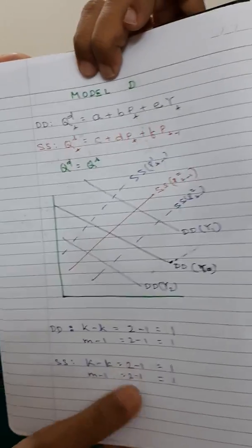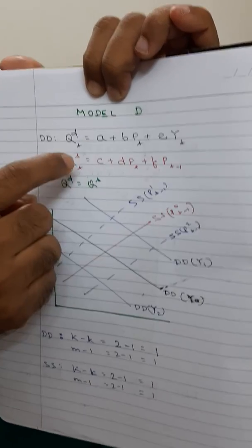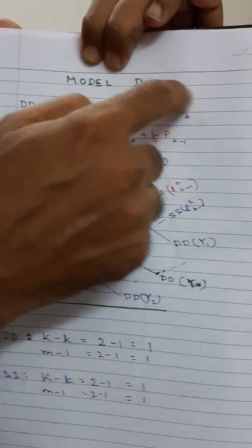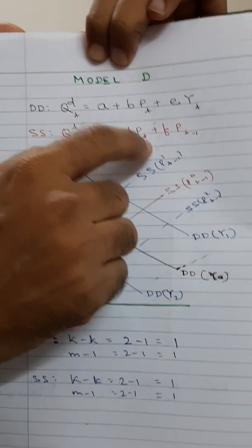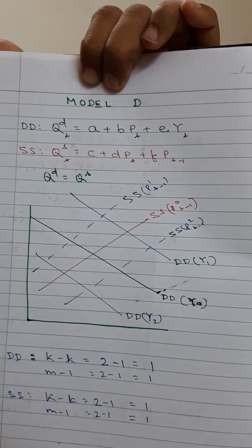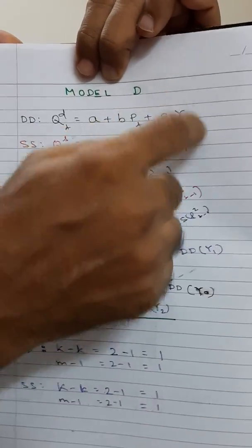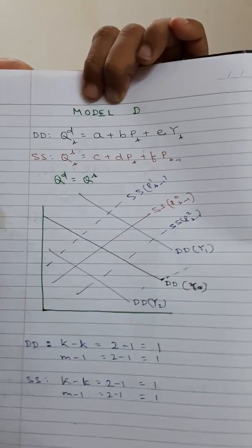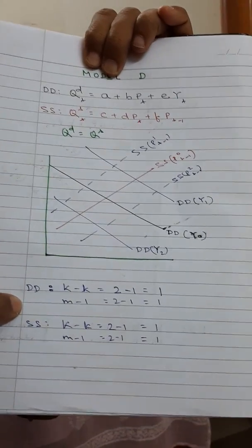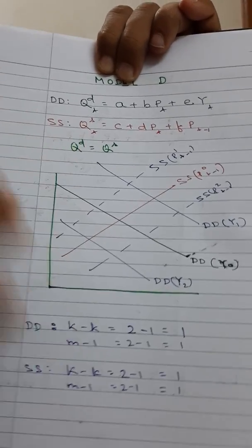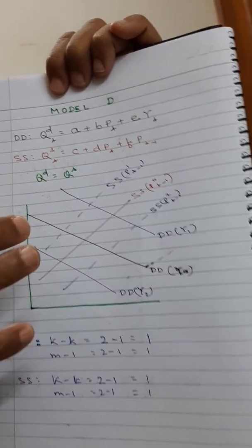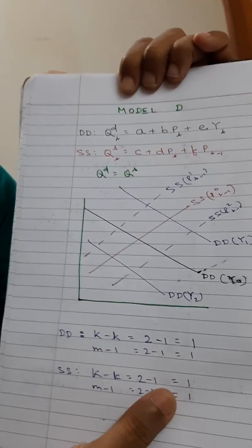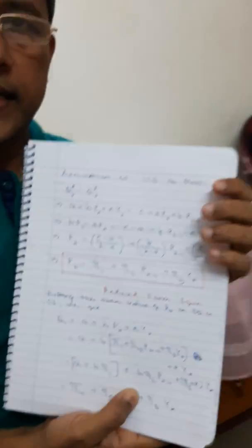In Model D, there is one additional predetermined variable in each equation. The demand equation is: Qd equals a plus b·P(t) plus e·Y(t), where Y(t) is exogenous. The supply equation is: Qs equals c plus d·P(t) plus f·P(t-1), where P(t-1) is a predetermined variable. Adding one predetermined variable to each equation allows us to identify both demand and supply equations. Applying the order condition confirms that both equations are exactly identified, so we can apply ILS to both.